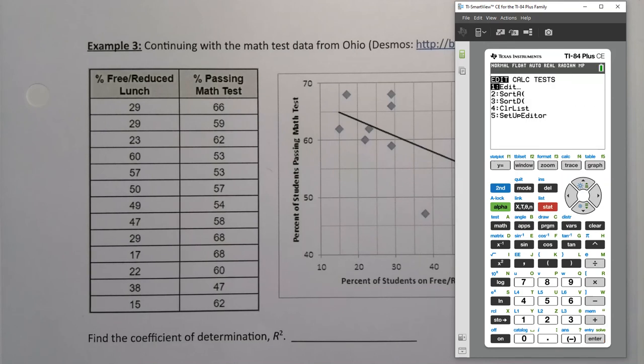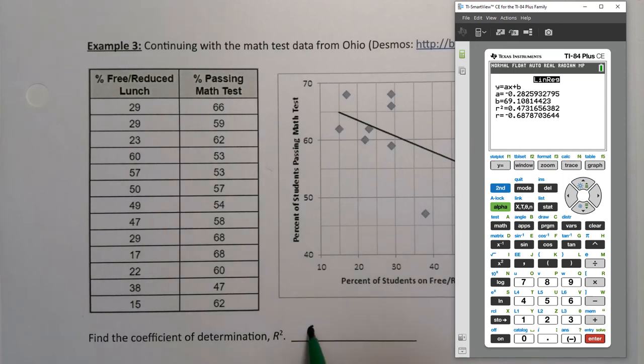Stat, Calculate, Number 4. L1 and L2, all that good stuff. Same thing you do to get the linear regression line as well as the correlation coefficient. R-squared is right there. .473. So 0.473.